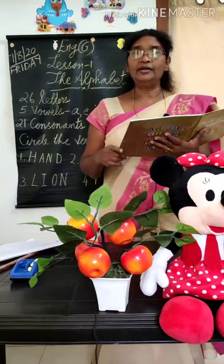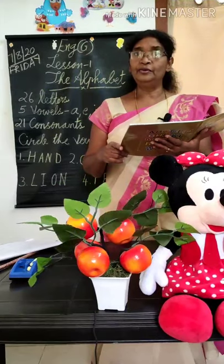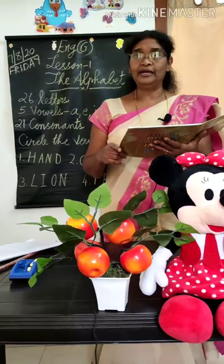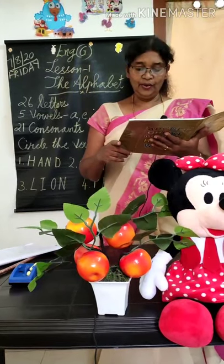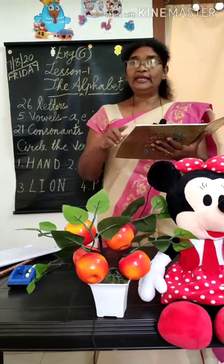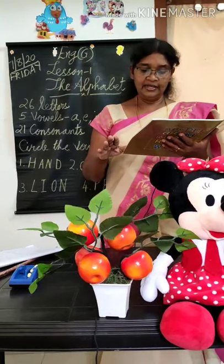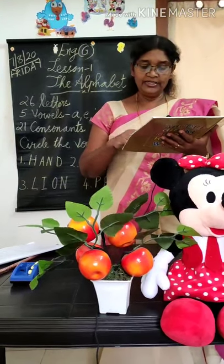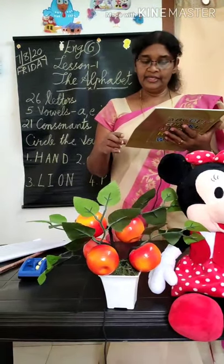Next one is OWL. The beginning letter O is a vowel. O, W, L — OWL.